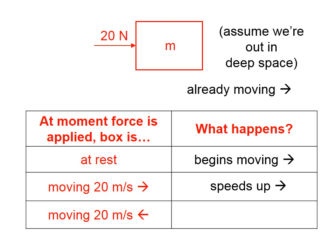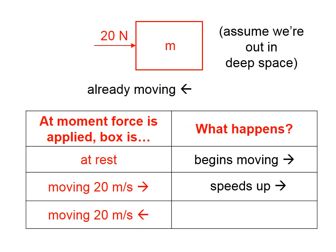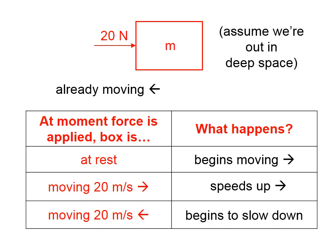Suppose it's already moving to the left, and just as it gets to us, we apply the 20 Newton force in the opposite direction. The 20 Newton force opposes the motion, so we're certainly going to get it to slow down. There is definitely a 20 Newton net force on this mass. No matter what the mass was doing, it's going to accelerate — if it was at rest, it starts moving; if moving to the right, it speeds up; if moving to the left, it slows down. This object is not in equilibrium.